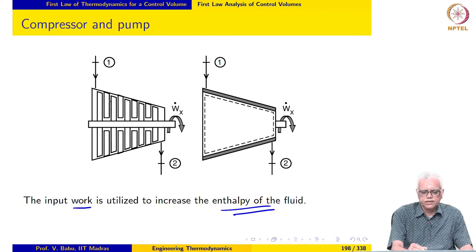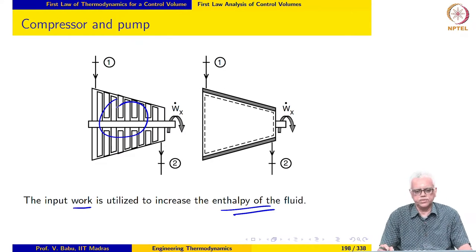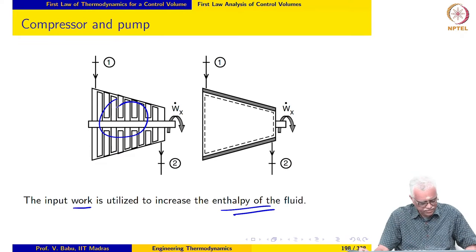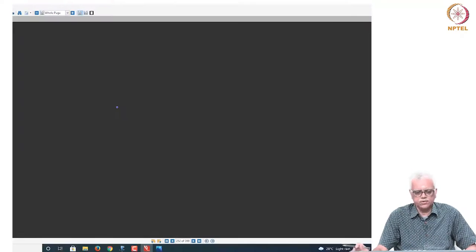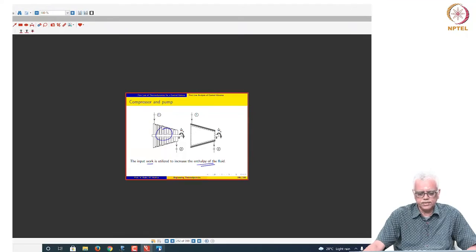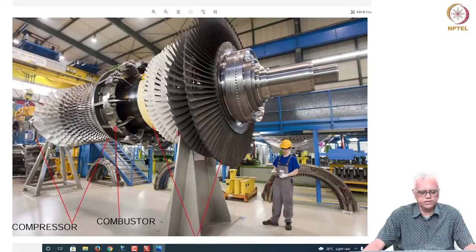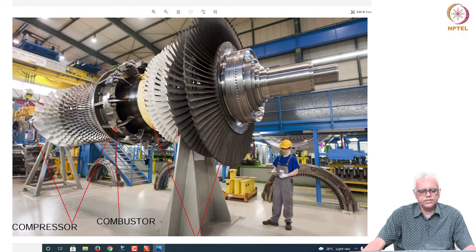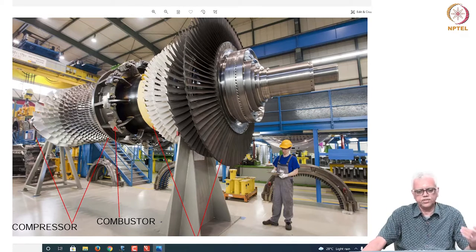What I have illustrated here is an axial flow compressor with similar moving blades and fixed blades. Let us take a look at the picture of the compressor here. You can see the moving blades, and you can see that the moving blades are more numerous than the turbine blades. There is a reason for this which will be discussed later in a turbo machinery course.